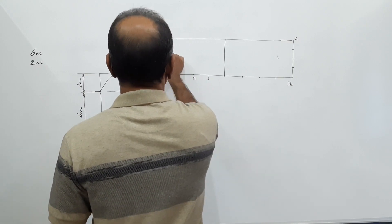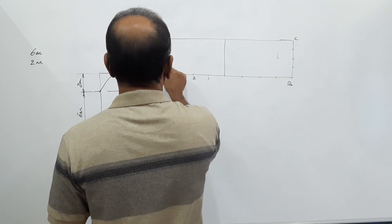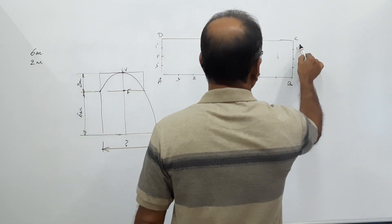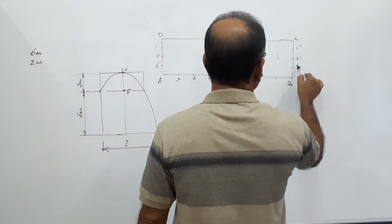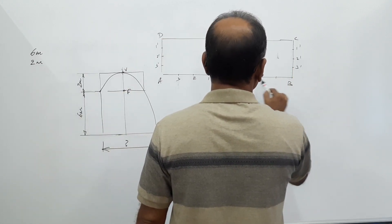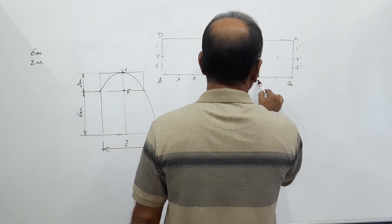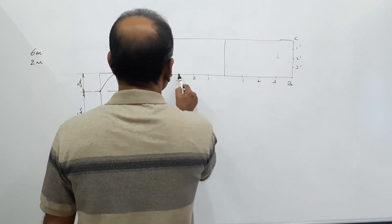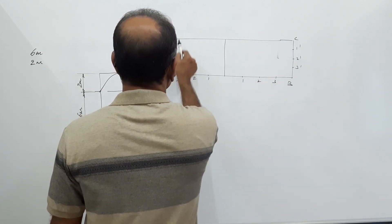Label the division points as 1, 2, 3 on one side and 1 dash, 2 dash, 3 dash on the corresponding side. Then draw vertical lines through them.